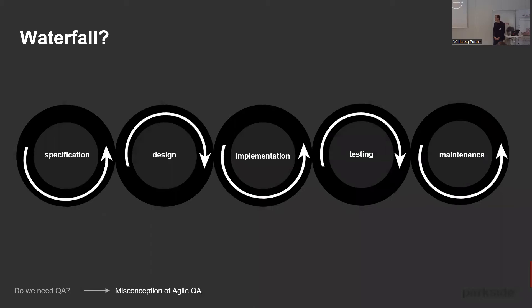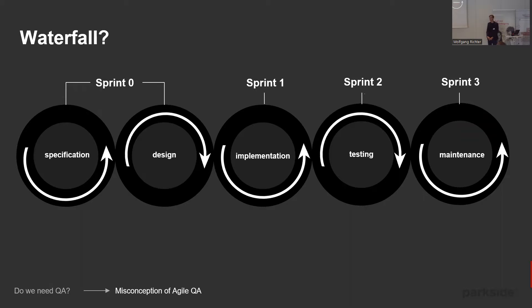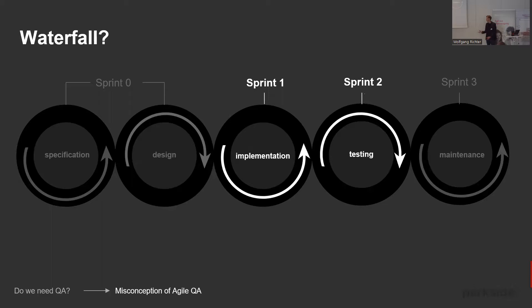Since testing is part of the software development process, let's talk about how it works. Look at a typical waterfall process: specification, design, implementation, testing, maintenance. Quite often it happens that companies call iterations sprints, shorten them a bit, and then follow the same process — as if calling it agile makes it no longer waterfall. Since this presentation is about quality assurance, I'd like to talk about implementation and testing, which should in fact be the same process within one iteration.